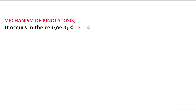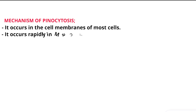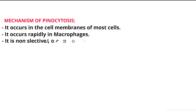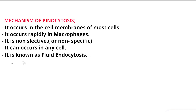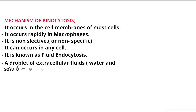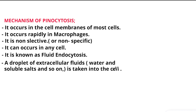Mechanism of Pinocytosis: It occurs in the cell membranes of most cells. It occurs rapidly in macrophages. It is non-selective or non-specific. It can occur in any cell. It is known as fluid endocytosis. A droplet of extracellular fluid, with water and soluble salts, is taken into the cell.